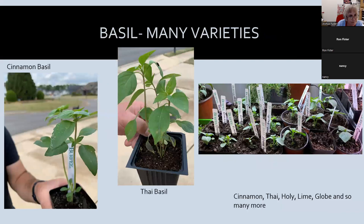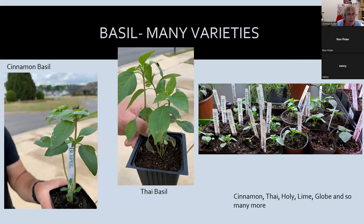Thai basil and cinnamon basil are very similar — you can tell the difference by the leaf. They're a great substitute for each other, though Thai basil has more of a licorice taste while cinnamon basil has a true cinnamon flavor and goes well with fruit, squash, and similar plants. Globe basil is great for inside — it's very compact, you can shape it into a little round ball, the leaves are very small, and it's more spicy than most other basils.